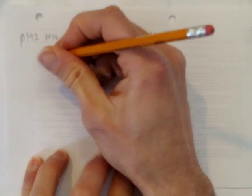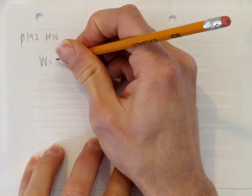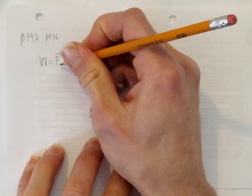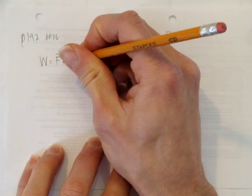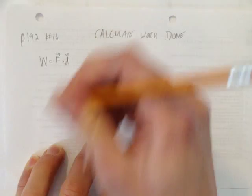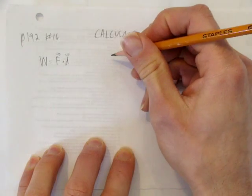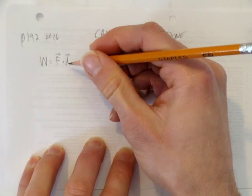Okay, well, we're going to use the formula work equals the force vector and take the dot product of that with the direction vector. Well, first, we've got to figure out this force vector.